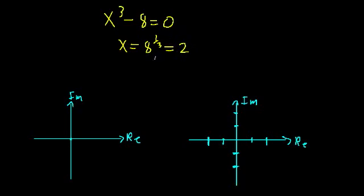You may rack your brain trying to think about that. You may think, what about negative 2? But negative 2 cubed will give you negative 8. So you may think harder and harder and eventually not come up with anything. Because the other two solutions are fairly unintuitive — the other two solutions aren't real. They're complex. And that's what we're going to do in this video: learn how to take the complex roots of a number.